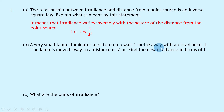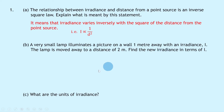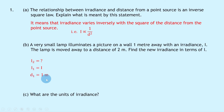Part b says: a very small lamp illuminates a picture on a wall one meter away with an irradiance I. The lamp is moved away to a distance of two meters — find the new irradiance in terms of I. We're trying to find the new irradiance, so let's call that I₂. The initial irradiance is just I, so I₁ = I, d₁ = 1 meter, and d₂ = 2 meters.